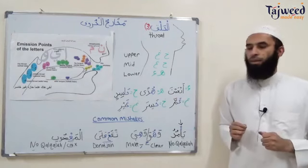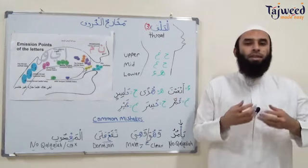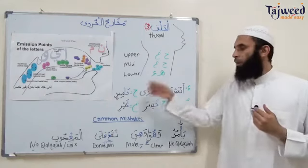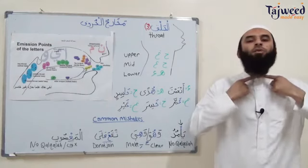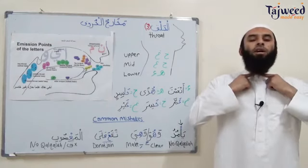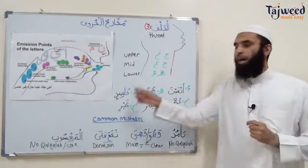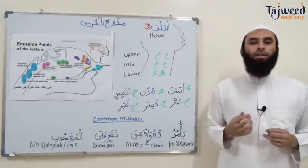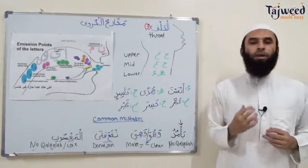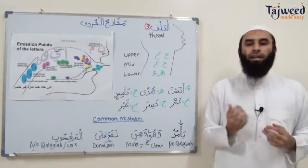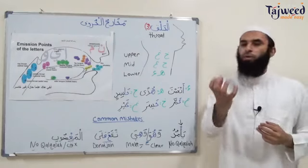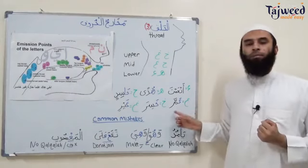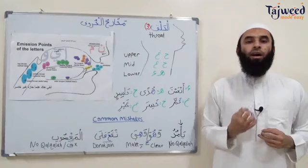Now we have ha. Imagine ha — it's like spicy hot food: ha, ha, ha. Or the middle part of the throat squeezing itself: ha, ha, ha. Hasid. Then we have ayn. Open our mouth: ayn. Like there's a fruit and we want to bite it — a, ayn. So amma, amma.